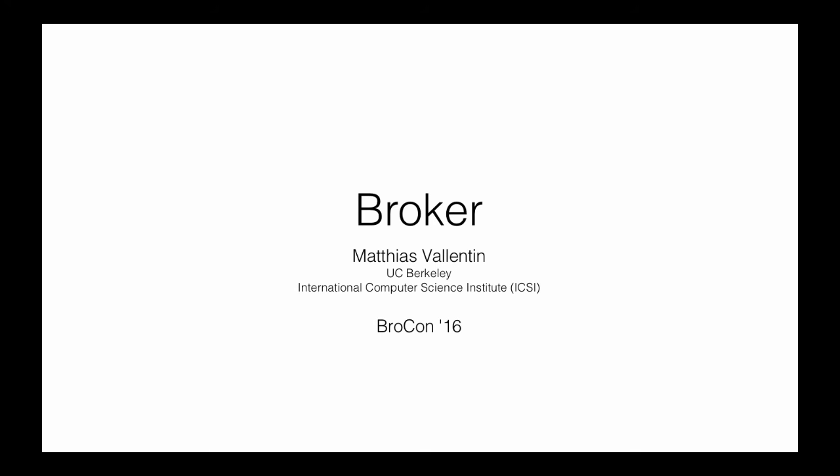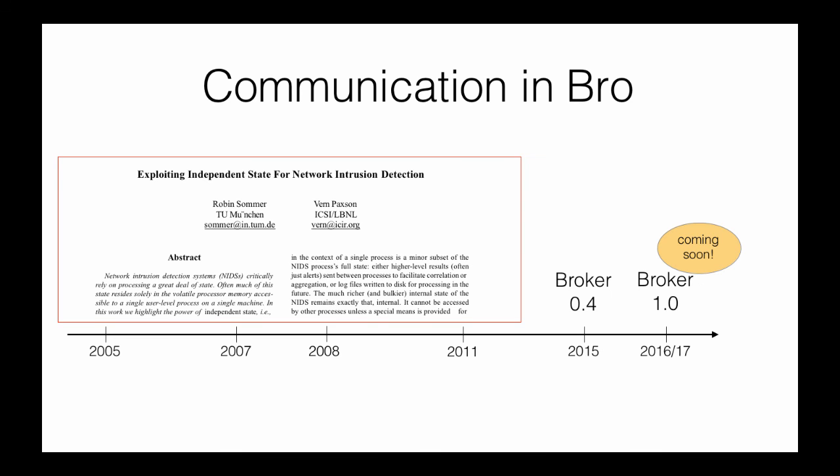Let's revisit communication in Bro. In 2005, Robin created the independent state framework, and since then Bro was able to communicate with other Bros. Christian Kreibich wrote the Broccoli Library — an acronym for Bro's Client Communication Library — which allowed arbitrary C applications to interface with Bro and send data in Bro's data model, enabling host-based or external context to be incorporated into Bro.